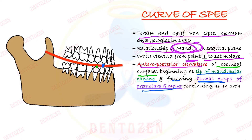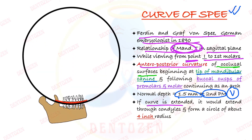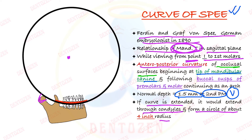When we draw a line passing from the tip of the mandibular canine through the buccal cusps of premolars and molars, we get a curvature known as the curve of Spee. This curve is deepest at the second premolar region — the normal depth is 1.5 millimeters — that can be your viva question. If we extend this curve of Spee, it passes through the condyle of the mandible and forms a circle of about 4-inch radius — another potential viva question.